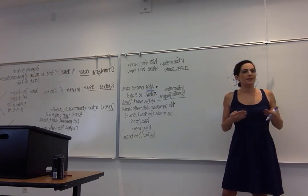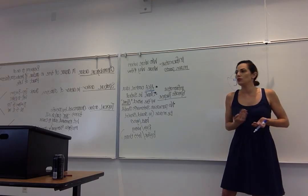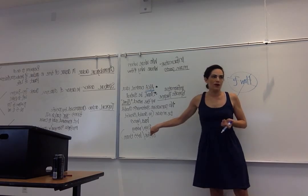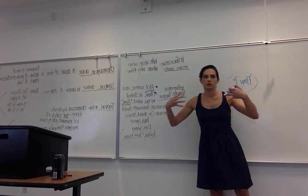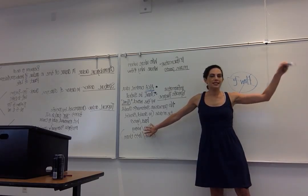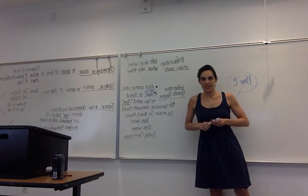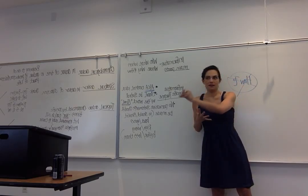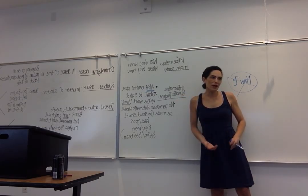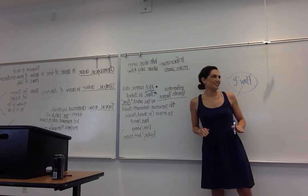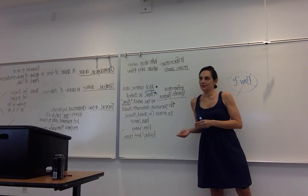We don't want any persuasive statements in our specific purpose. That means you need to avoid the words should or shouldn't, good or bad, right or wrong, better or less than — those are persuasive speeches. So hold on to those arguments. For example, 'to inform my audience that yoga is the healthiest way of living' — that's persuasive. If you just want to talk about what yoga does for your body, you should say 'to inform my audience about yoga,' not 'to inform my audience that yoga is the best form of exercise.' That's persuasive.